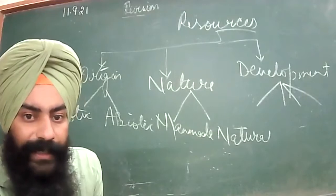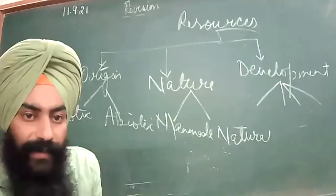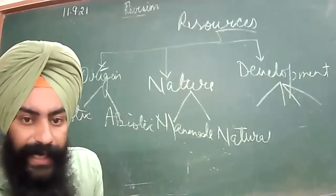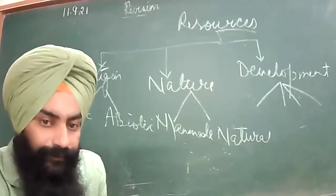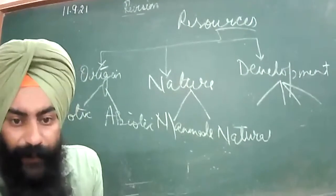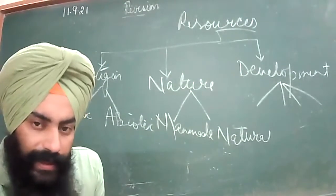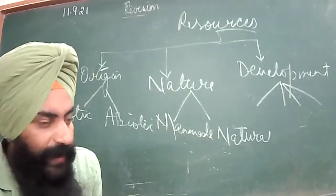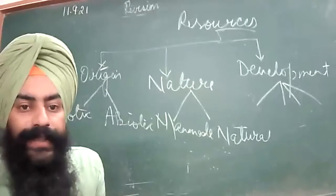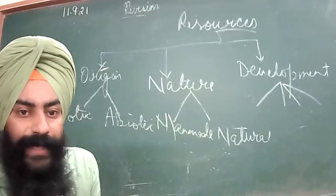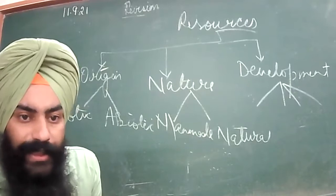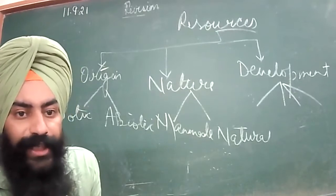The fourth type under level of development is reserves — resources available in a country but not being utilized at present because we are saving them for the future. For example, thorium extracted from the coastal parts of Kerala is a nuclear substance used in nuclear reactors for generation of electricity.